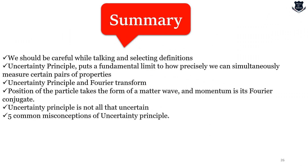So we are done with today's video. We have learned that we should be very careful while selecting definitions. The uncertainty principle is not about uncertainty but produces a fundamental limit on simultaneous measurements. The uncertainty principle and Fourier transform are related. The position of the particle takes the form of a matter wave and its momentum is its Fourier conjugate. The uncertainty principle is not at all 'uncertain,' and we have learned the five most common misconceptions.